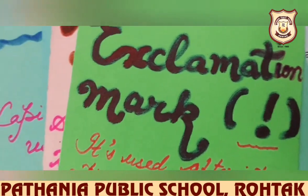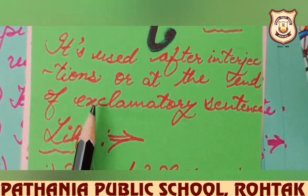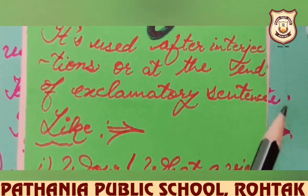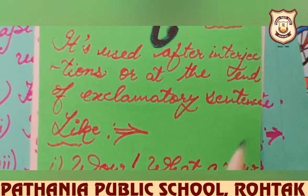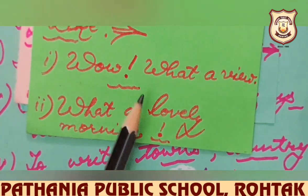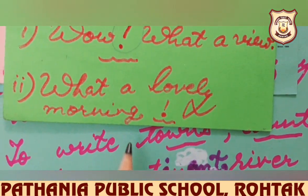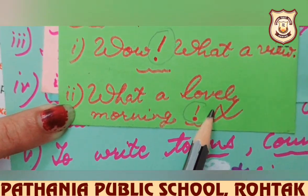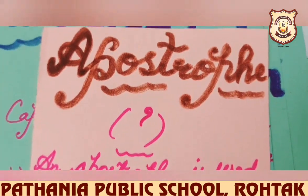Our next punctuation mark is exclamation mark. It is used after interjections — words which show the sudden feeling of our heart. For example, 'Wow, what a view!' — here 'Wow' is the interjection, so we use an exclamation mark. In the second sentence, 'What a lovely morning!' — there is no interjection, but the sentence is exclamatory, so we still use an exclamation mark at the end.